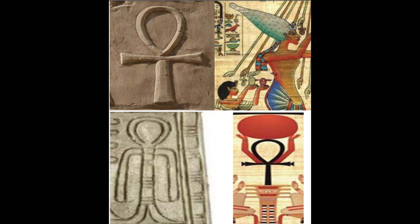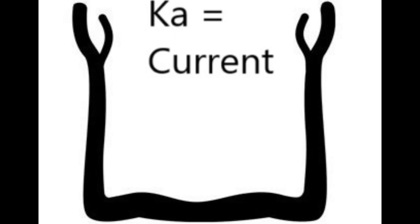Hello. In this episode, I'm going to be explaining my interpretation of several symbols which I think are representing different types of oscillators. If you recall, in episode 3, I explained why I think the car symbol means current or current flow, and I concluded that the ancient Egyptians regarded current as the vital essence of life.